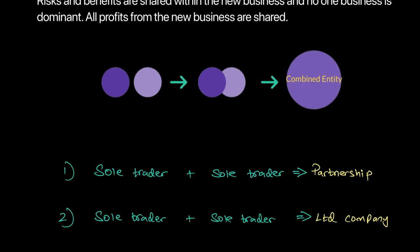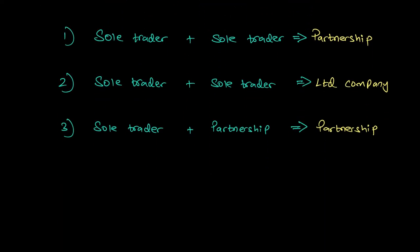So what cases can we encounter in the course? We can come across a case where sole traders can merge to form a newly formed partnership, or two sole traders can merge to form a newly registered limited company. We can also come across a case where a sole trader and partnership can merge to form a newly registered partnership. The essential idea is that there is no dominant party because they both are combining to become a stakeholder in this business — there is no buyer and seller; they both are forming and becoming a part of this newly registered company.